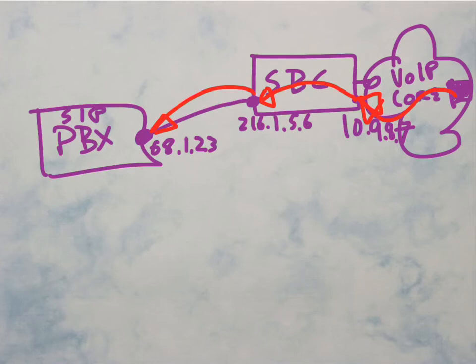So what's happening here is that the SIP PBX is able to receive a call from an IP address that it always is going to expect. So it can be configured to know, you know, I know what 216.1.5.6 really means.